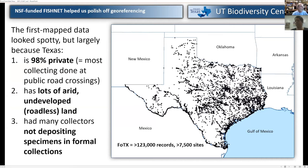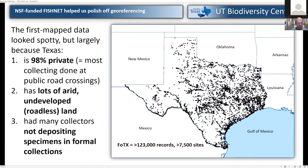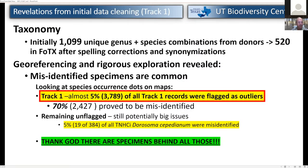We pulled all that data together and spent a ton of time cleaning it up and making it mappable. This early map kind of surprised us — we expected a little more coverage. But Texas is 98% private land, so you can't go hardly anywhere without landowner permission. Virtually all collecting is done at public road crossings. It's very arid in the west, so not a lot of fish habitat or road access. We also knew a lot of collecting had been done but hadn't made it into collections — those data hadn't been shared with anybody.